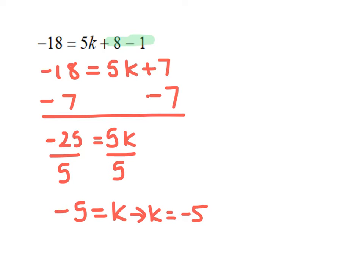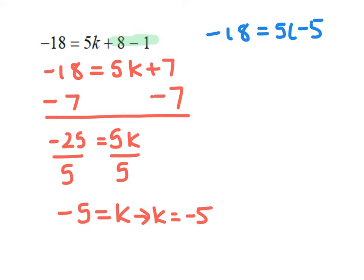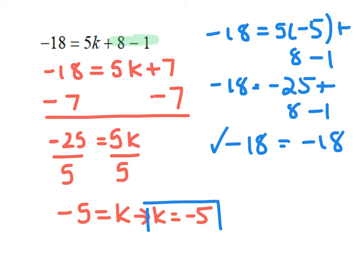The last thing we have to do is check our answer by plugging it back into the original equation. So: negative 18 equals 5 times negative 5 plus 8 minus 1. Simplifying gives negative 18 equals negative 25 plus 8 minus 1, and combining like terms on the right gives negative 18 equals negative 18. Since this is a true statement, our answer is k equals negative 5.